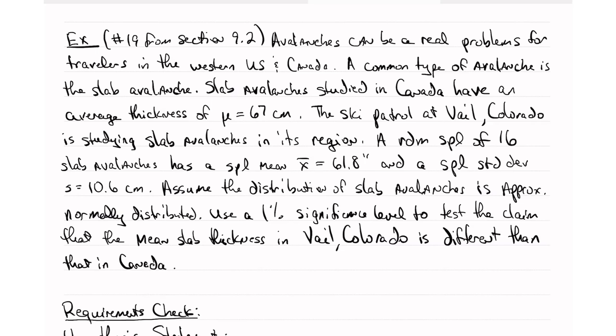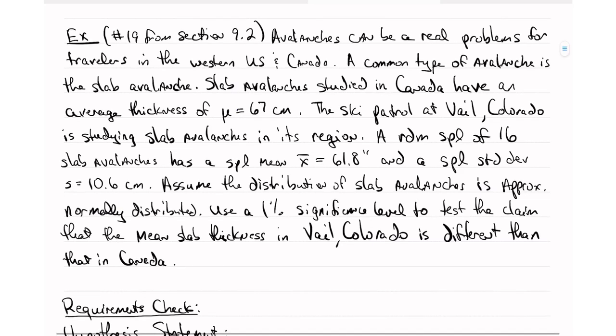A very common type of avalanche is called the slab avalanche. These have been studied extensively by David McClung, a professor of civil engineering at the University of British Columbia. Slab avalanches studied in Canada have an average thickness of mu equals 67 centimeters. Now, remember that we really don't know mu. This is an approximation. So I'm going to add a little squiggly line over the equal sign because they don't really know the true mean.